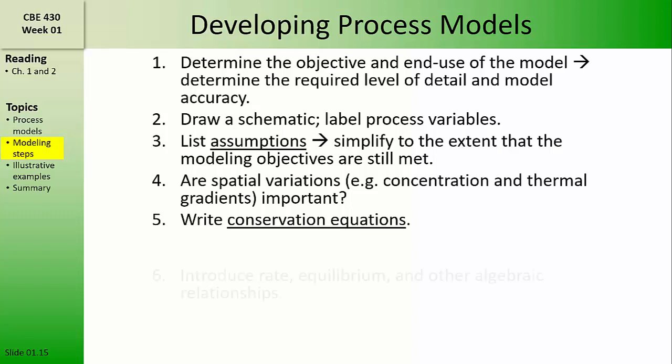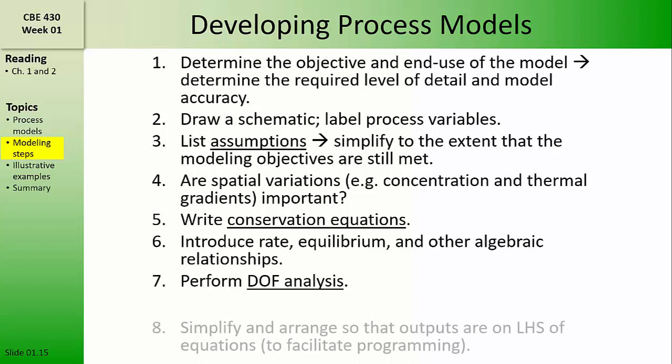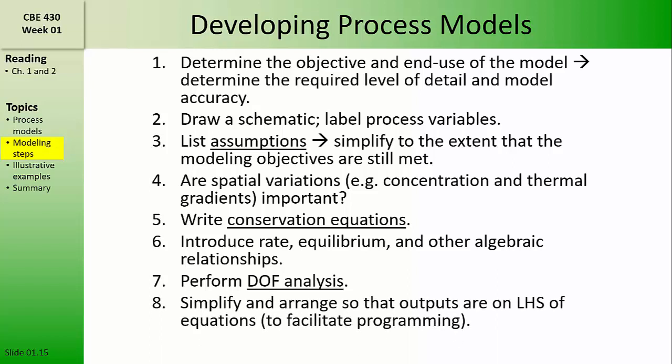Next, we'll write conservation equations, and then we'll parameterize the conservation equations and other balance equations with rate relationships, equilibrium relationships, and other algebraic relationships like definitions and constraints. Then, we'll perform a degree of freedom analysis, and then we'll simplify the model and arrange it so that the outputs are on the left-hand sides of the equations to facilitate programming and finding model solutions. Finally, we will classify inputs to our model as either disturbance variables or manipulated variables.